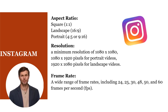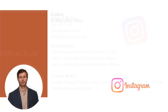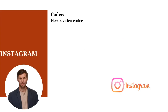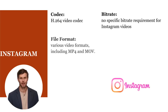Instagram supports frame rates ranging from 24 to 30 frames per second. Instagram recommends using the H.264 codec for video compression. While there's no specific bitrate requirement, it's recommended to use a bitrate that balances quality and file size. Instagram accepts various video file formats, including MP4 and MOV.